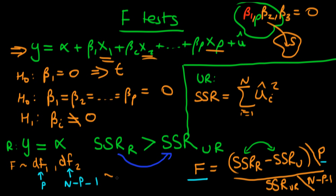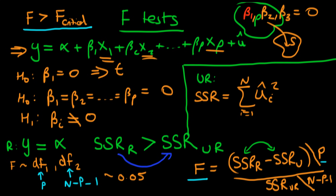Just as with a t-test, we normally use a 95% confidence level, so we look up a p-value of 0.05, which gives us a critical value. We reject the null hypothesis if the value of our F-statistic is greater than this critical value from the F-distribution. That's how we test for significance of multiple regression coefficients. In the next video I'm going to go through this with an example.